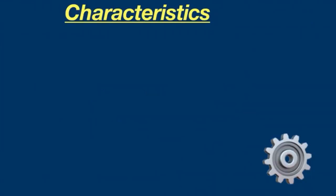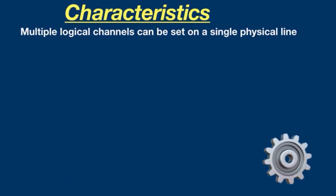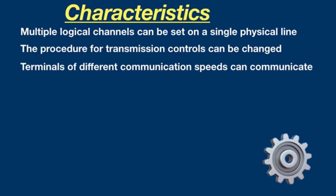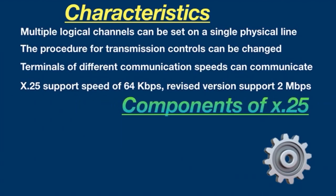Characteristics of X.25: Multiple logical channels can be set on a single physical line. The procedure for transmission control can be changed. Terminals of different communication speeds can communicate. X.25 was capable of supporting a transmission speed of 64 kilobits per second, and a revised version was able to support 2 megabits per second.